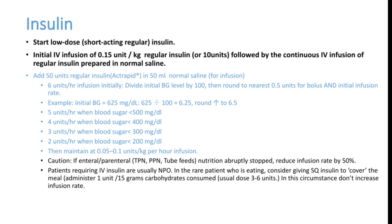Document how much total insulin is required in the last 24 hours, as the fixed dose depends on the cumulative previous day's dose. Start at 0.15 units/kg or 10 units infusion initially, then reduce dose as blood sugar falls. Continue normal saline with insulin infusion until blood sugar drops below 250, then change fluid to DNS or 5% dextrose.